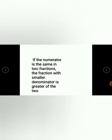Next, comparison of unlike fractions. We are going to discuss how we can compare unlike fractions — the denominators will be different. First we can see the case of unlike fractions when the numerators are same. If the numerator is the same in two fractions, the fraction with the smaller denominator is greater of the two. So if we have unlike fractions where the numerators are same, we compare the denominators — whichever denominator is smaller, that fraction is greater.